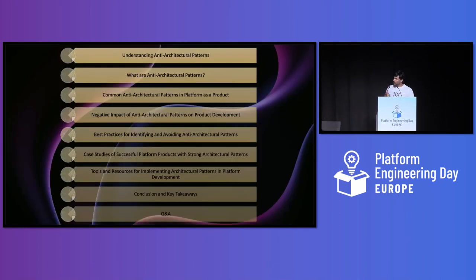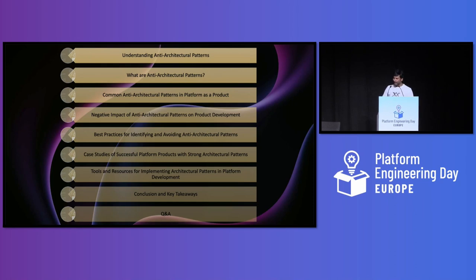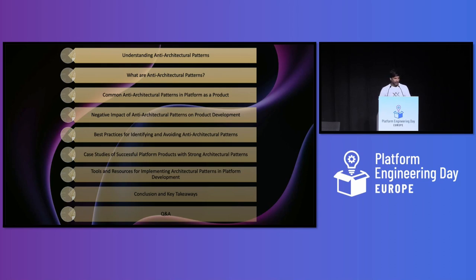Let's see what we are covering today. We'll understand what is an anti-architectural pattern, what are the patterns, an example, and some common anti-architectural patterns in the product. What are the negative impacts? What are the best practices to avoid them, some successful case studies, and tools and resources to implement architectural patterns, plus conclusions and key takeaways.